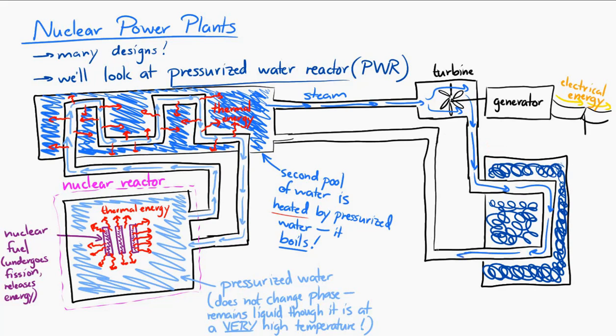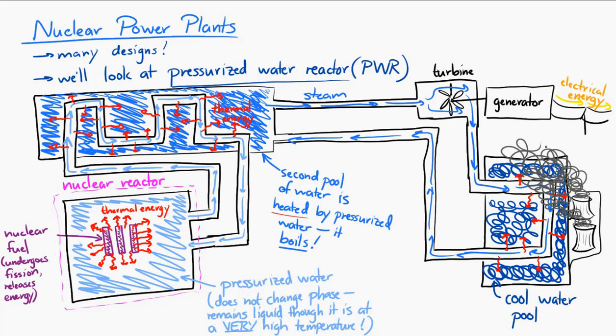Now, this cool water pool over here is what we often associate with nuclear power plants. Because there, that cool water pool, the idea is that the water that came from the turbine is transferring some of its thermal energy to this cool water. And this cool water often turns into steam. And it exits the power plant. And it exits the power plant through the cooling water towers, which are those distinctly shaped things that we often associate with nuclear power plants.